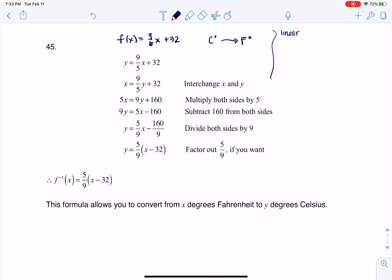So in terms of does the inverse function exist, this is a linear function. This is a line, its slope is 9/5, and its y-intercept is 0, 32. Anytime you have a linear function that's not horizontal, it sure enough is a 1-to-1 function, and if it's a 1-to-1 function, that's going to tell us f inverse of x exists.